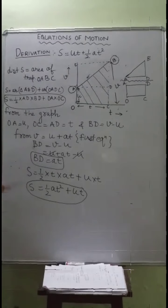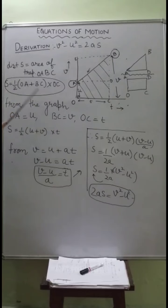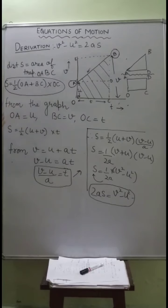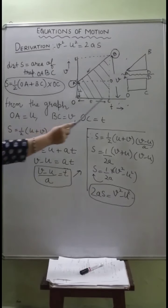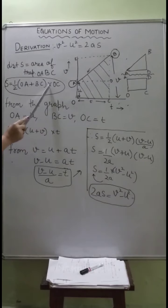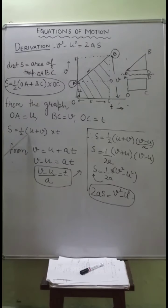The third equation of motion is v² - u² = 2as. We use the same method as for the second equation: distance equals the area of trapezium OABC. The formula for the area of a trapezium is ½ × (sum of parallel sides) × height. The parallel sides are OA and BC, so s = ½ × (OA + BC) × OC. From the graph, OA = u, BC = v, and OC = t, giving s = ½(u + v)t.